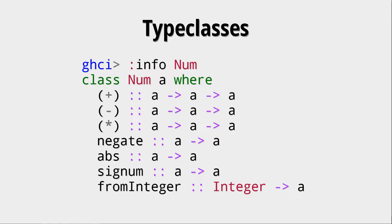So how does the Num type class look like? Well, you can get info on that with the colon info command in GHCI. And that's where you get some info on what functions are defined for types that are in this type class. So, for example, plus, minus, multiplication, negate, absolute, signum, which gives you a representation of the sign of this number, and from integer.